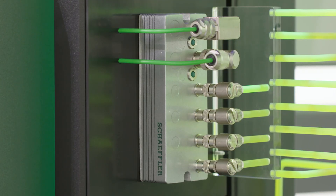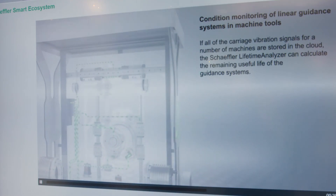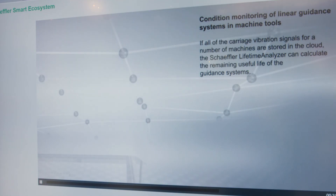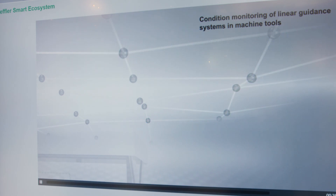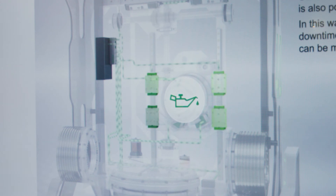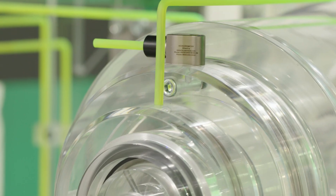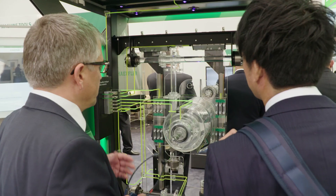The prototype presented at the EMO has eight measurement channels and highly sophisticated software. It can even be connected to the Scheffler Cloud, meaning that all digital services of the Scheffler Smart Ecosystem can be utilized. This includes features such as triggering a lubrication impulse automatically and recording the real load on the main spindle.